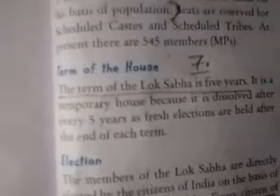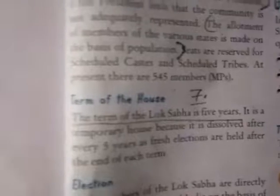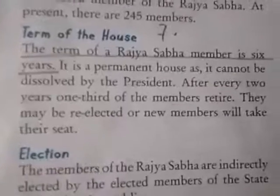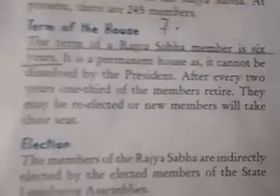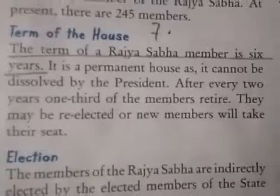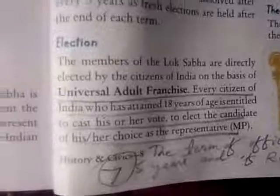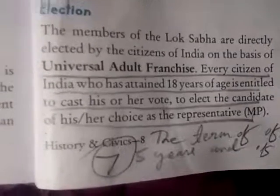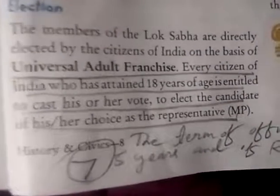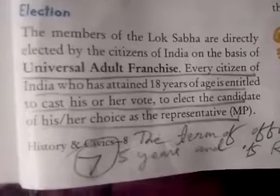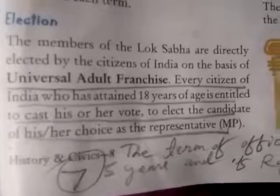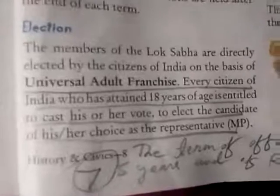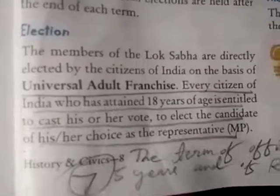Seventh number answer — what is the term of both houses? The term of the Lok Sabha is five years. The term of the Rajya Sabha is six years. The meaning of the term universal adult franchise is that every Indian citizen who has attained 18 years of age is entitled to cast his or her vote to elect the candidate of his or her choice as a representative or member of parliament.